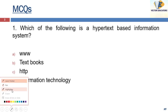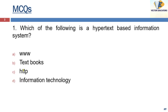The first question is: which of the following is a hypertext-based information system? The answer is WWW. Hypertext means any text that contains a link to other text. WWW stands for World Wide Web — the web pages we see on the device when online.